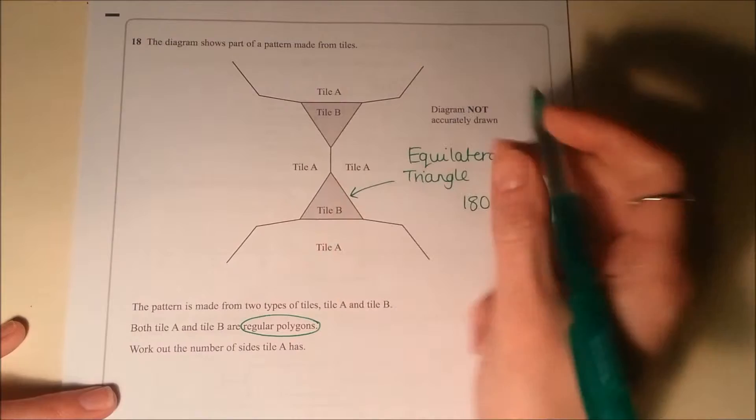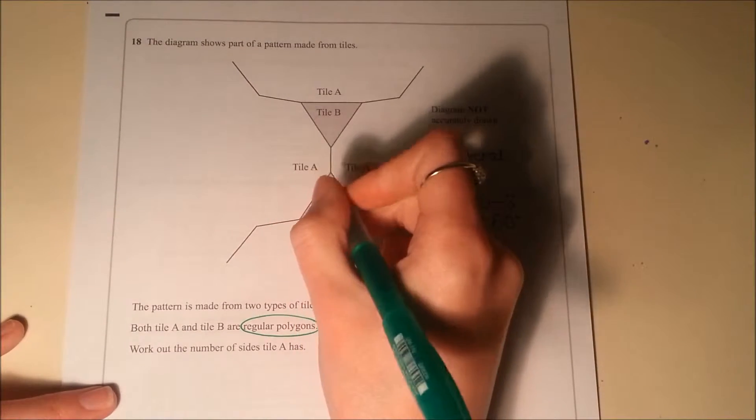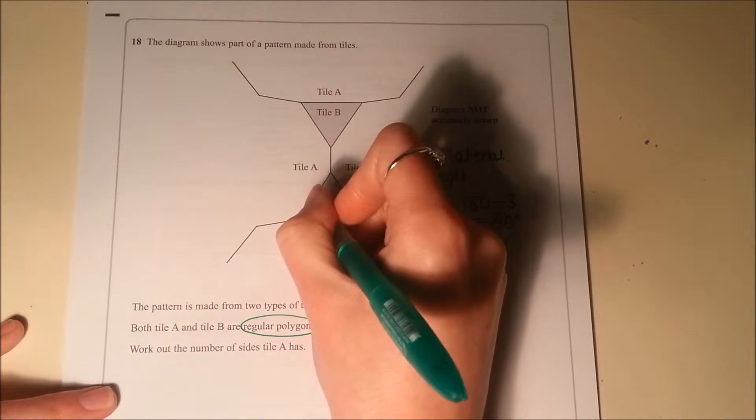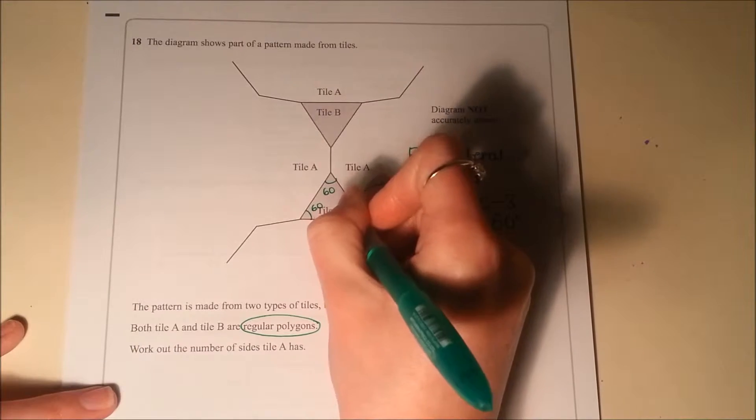If it's regular, each angle is the same size, so each angle is going to be 60. So we can start to mark that on. That's 60, that's 60, that's 60.